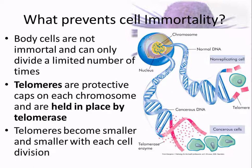Cell immortality involves telomeres — little caps on the ends of chromosomes. Telomerase keeps the caps healthy, but we stop making telomerase in childhood, so every time a cell replicates, the telomere gets shorter. After about 50 replications, the cell commits apoptosis. In a cancer cell, telomerase is normally shut off, but the cancer cell has found a way to turn it back on, so it can replicate indefinitely — it turns on the gene for telomerase and just keeps causing replication.